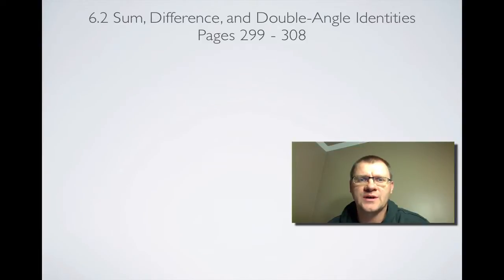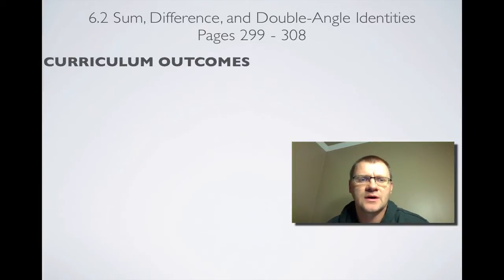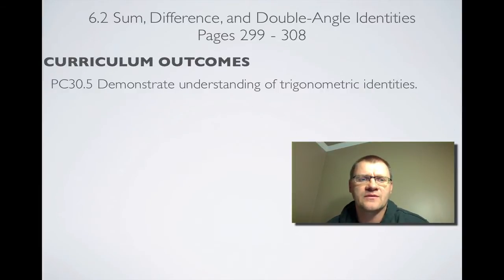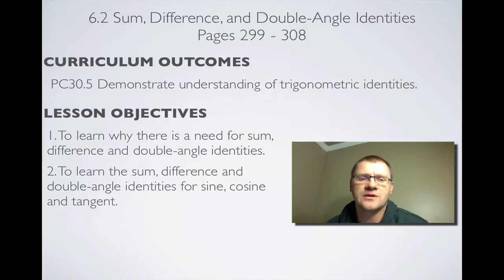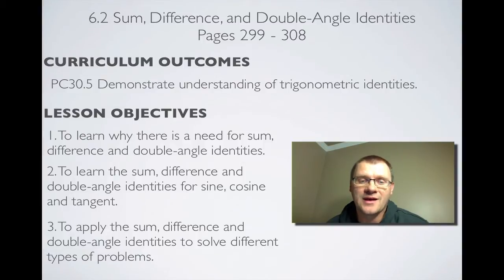Today's topic is 6.2: Sum, Difference, and Double-Angle Identities, found on pages 299 to 308 in your text. Our curriculum outcome is 30.5, where we need to demonstrate understanding of trigonometric identities. Our lesson objectives: number one, we need to learn why there's a need for sum, difference, and double-angle identities. Number two, we need to learn the sum, difference, and double-angle identities for sine, cosine, and tangent. Number three, we need to apply these identities to solve different types of problems.